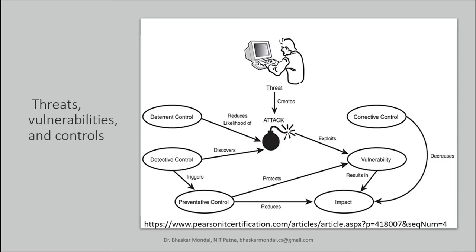On the other hand, it can be like this: you are downloading some software, and before downloading or installing it, you go through the security of the software — finding out whether there is any loophole or any malicious thing reported about it — and then deciding whether to allow it to install or not. So detective controls basically discover some attacks, and then you can either stop the attack, or even if you can't stop it, you can detect it.